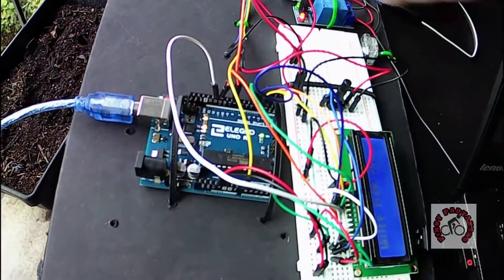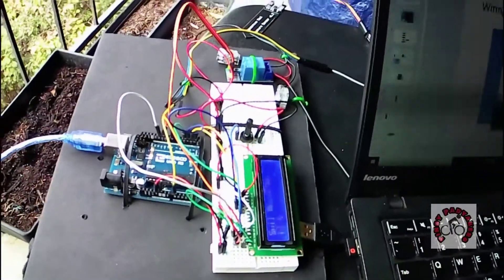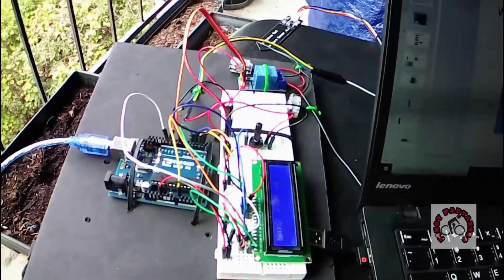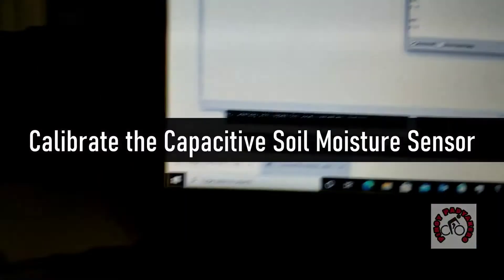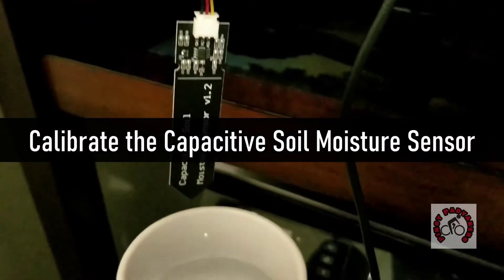The next step will be calibrating the capacitive soil moisture sensor. With the Arduino Uno still connected to the PC, open the serial port monitor.